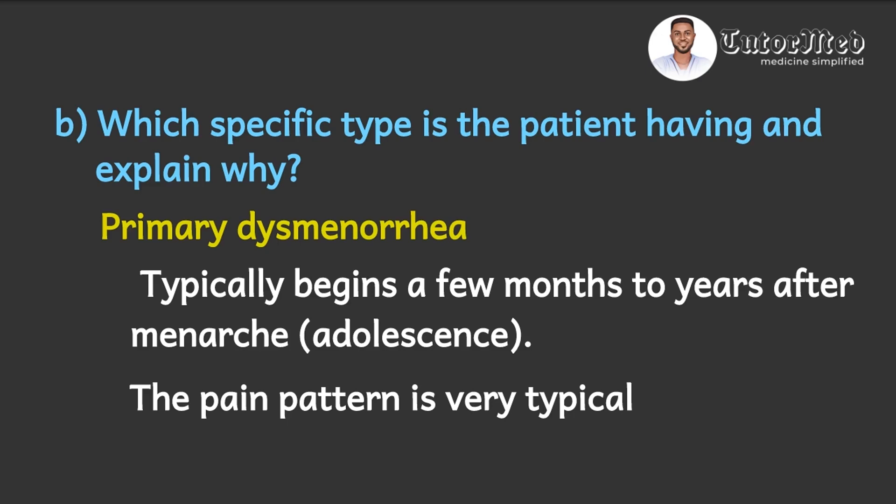So the two reasons are the age of onset and the pattern of the pain. Although the pattern of the pain is not really specific for primary dysmenorrhea — it can also occur in secondary dysmenorrhea — the main distinguishing reason is the age of onset.